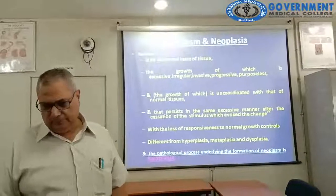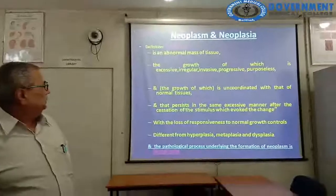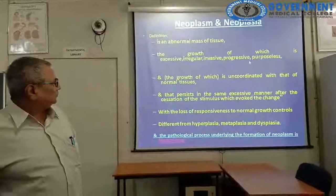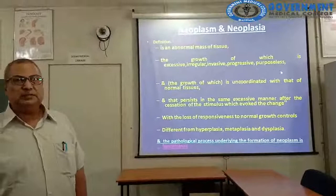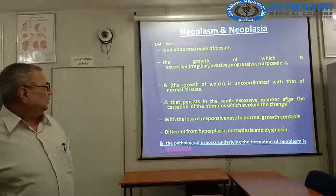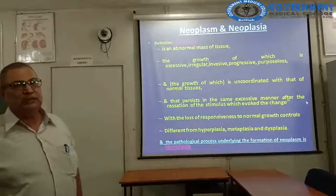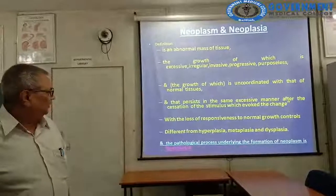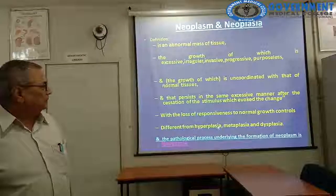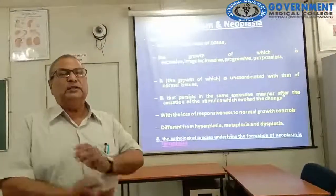The five adjectives in Willis's definition are: progressive, purposeless, irregular, invasive, and excessive. The growth is uncoordinated with that of normal tissue and the neoplasm persists in the same excessive manner after the cessation of stimuli which evokes the change. There is loss of responsiveness to normal growth controls, distinguishing it from hyperplasia, metaplasia, and dysplasia. The pathological process underlying the formation of neoplasm is called neoplasia.